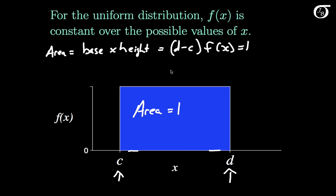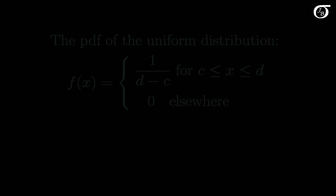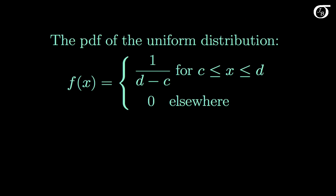And we know that has to equal 1. So between c and d, this implies that f is equal to 1 over d minus c. So this height here is 1 over d minus c. Here's the probability density function of the uniform distribution: f is equal to 1 over d minus c between c and d, and 0 elsewhere.